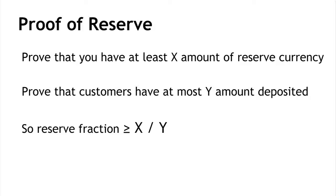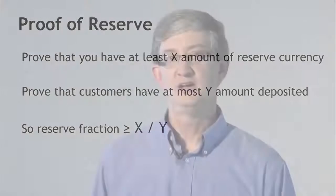If a Bitcoin exchange wants to prove they hold 25% or 100% reserves on all deposits, they can do that in a way that's independently verifiable by anybody — no central regulator required. That's an aspect of regulation Bitcoin exchanges can prove voluntarily, though other aspects of regulation, as we'll see in a later lecture, are harder to guarantee.